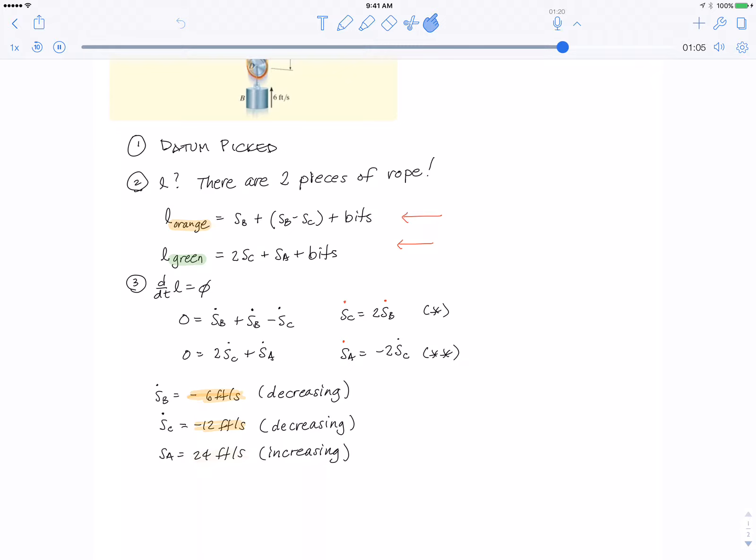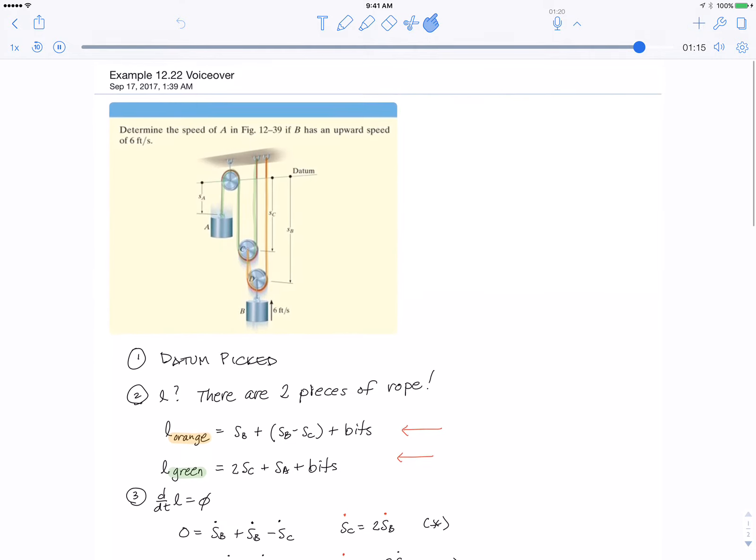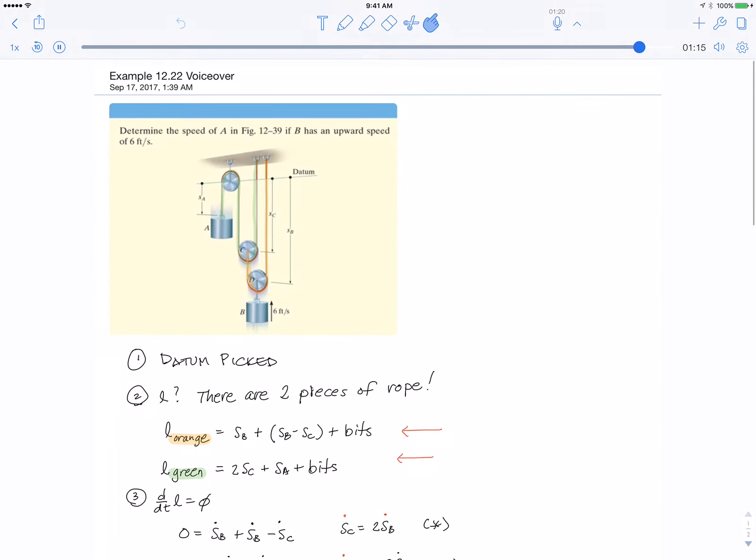SA is 24 feet per second. I keep saying feet per second squared instead of feet per second. It makes sense: B is going up, C is going up, and A is going down, so the signs make sense.